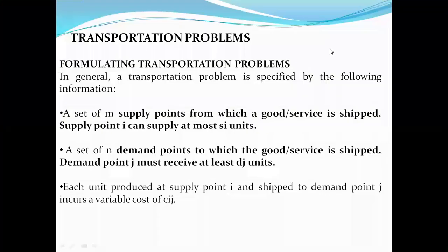As far as transportation problems are concerned, a number of industrial sectors manufacturing different kinds of products will have different warehouse stations across different places — many villages, towns, districts, and even different states. At different points, material needs to be transferred from one place to another, delivered at a particular district, and collected again at that delivery point. This iterative process plays a major role, where quantity measures are critical.